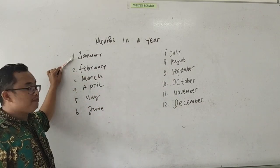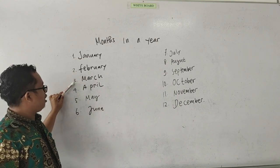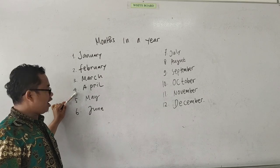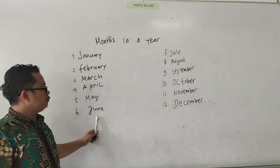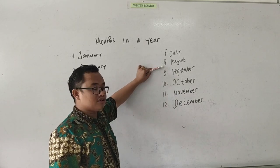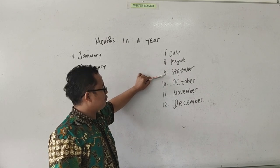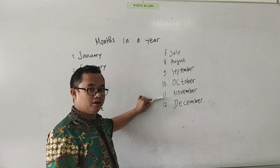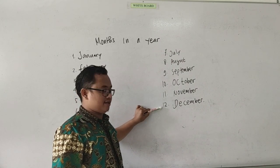January, bulan Januari. February, bulan Februari. March, bulan Maret. April, bulan April. May, bulan Mei. June, bulan Juni. July, bulan Juli. August, bulan Agustus. September, bulan September. October, bulan Oktober. November, bulan November. December, bulan Desember. Okay.